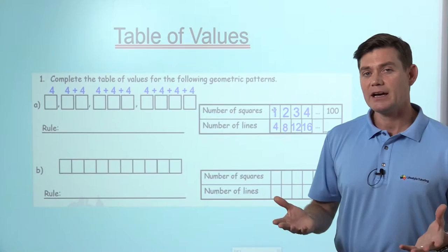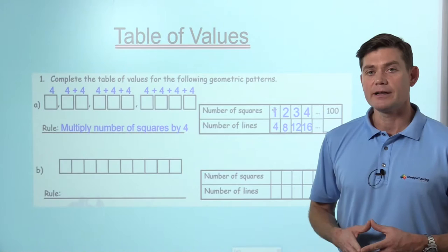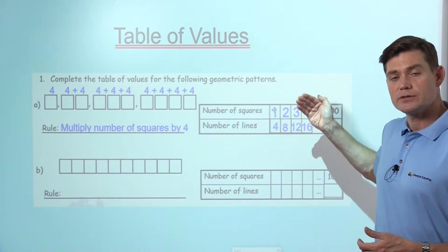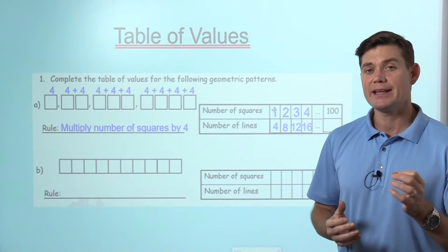So if I look at this now, we want to write a rule for this. How can we simplify this? We can simply say that to find the number of lines, we multiply the number of squares by four. One times four is four, two times four is eight, three times four is twelve.